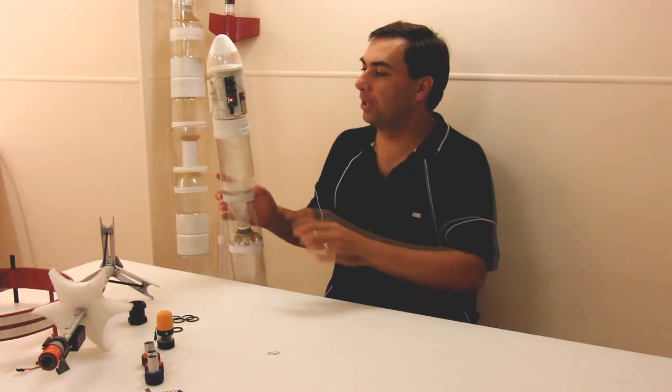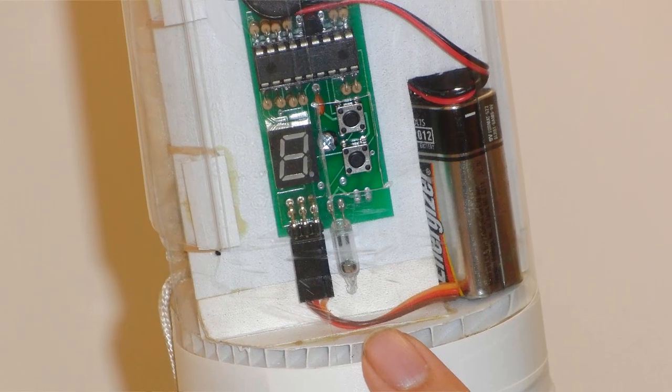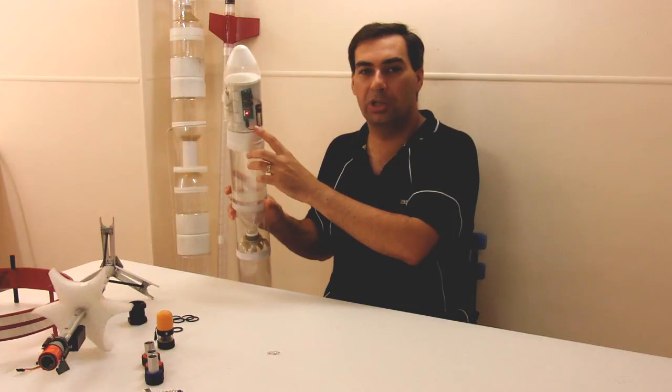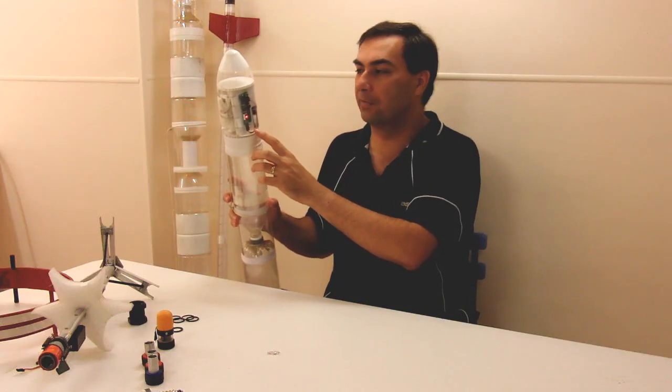Basically what I've done here is mounted a mercury switch as a trigger on a timer. So when the rocket tips over at apogee it should open the parachute. Let's see if it works.